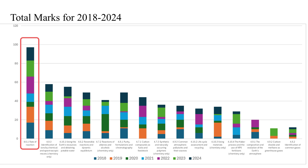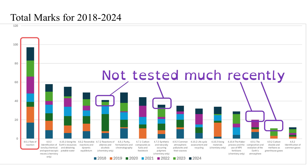With that in mind, we can highlight four subsections that were not tested much in 2024 — and some not much in 2023 either — making it slightly more likely that they'll be assessed in 2025.